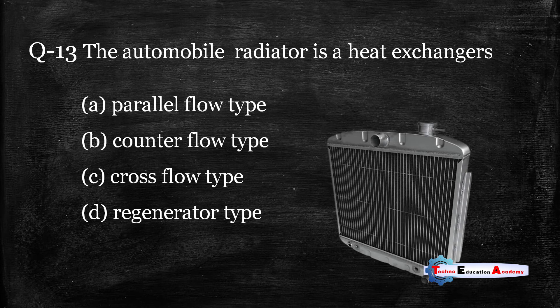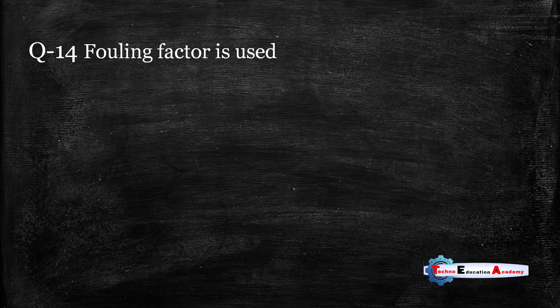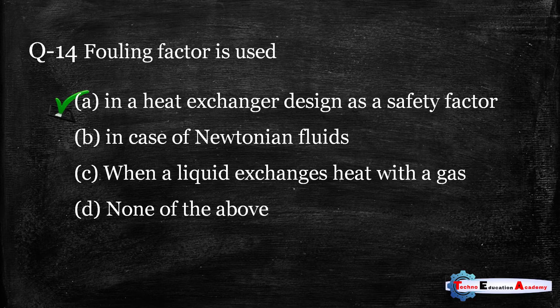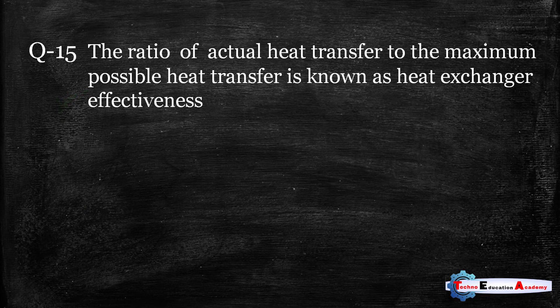Question number thirteen: The automobile radiator is a heat exchanger. In an automobile, the radiator is an application of a heat exchanger — a device in which hot fluid exchanges heat with cool fluid. It is a cross-flow type heat exchanger. Question number fourteen: Fouling factor is used in the design of heat exchangers as a safety factor. So the right answer is option — in heat exchanger design as a safety factor.